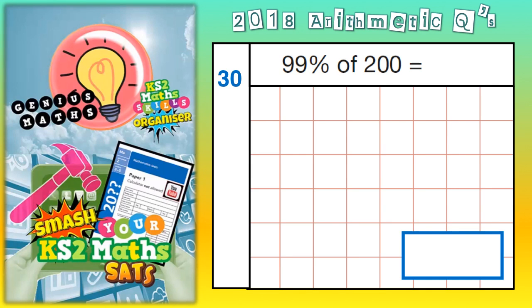Welcome, Arithmetic Ninjas, to question number 30, and this one's asking you for 99% of 200. Now, there's a couple of ways of doing this. We could do it a slower way and a quicker way. Let's try the quicker way first.